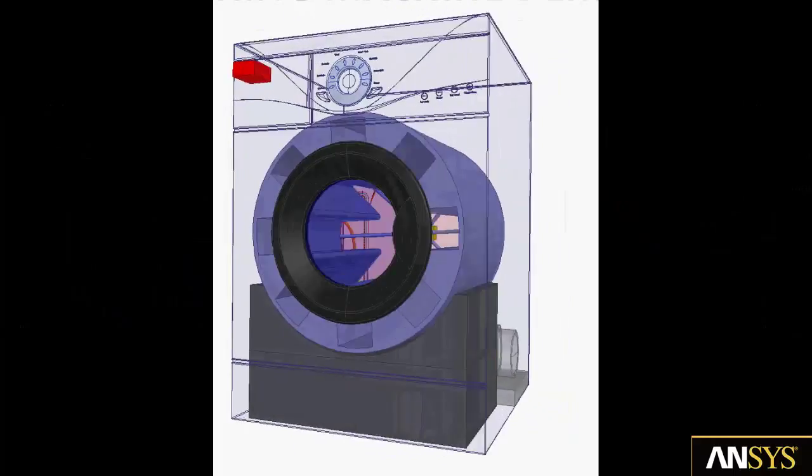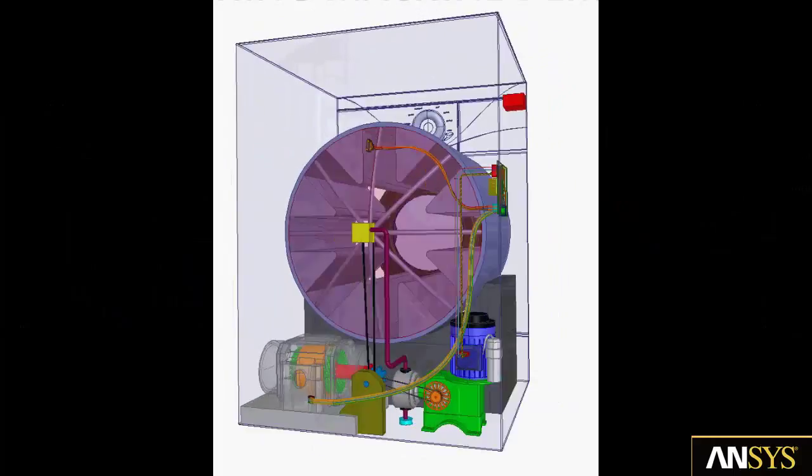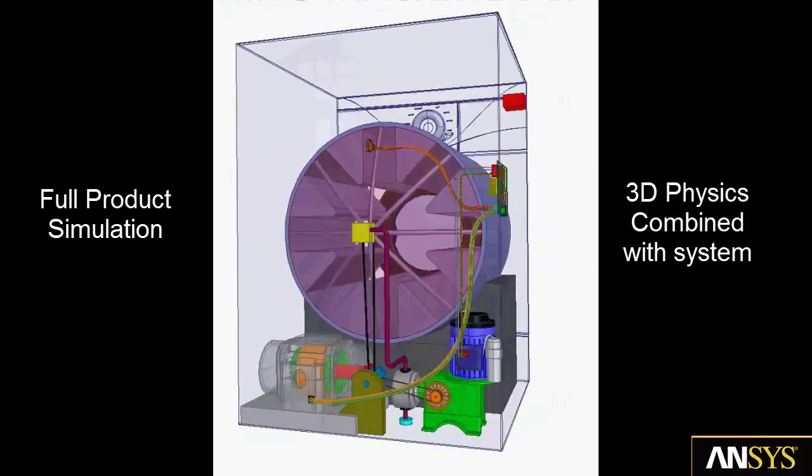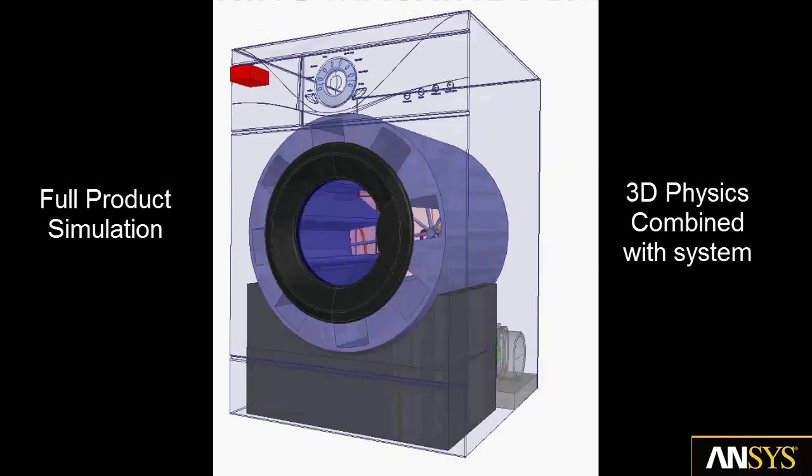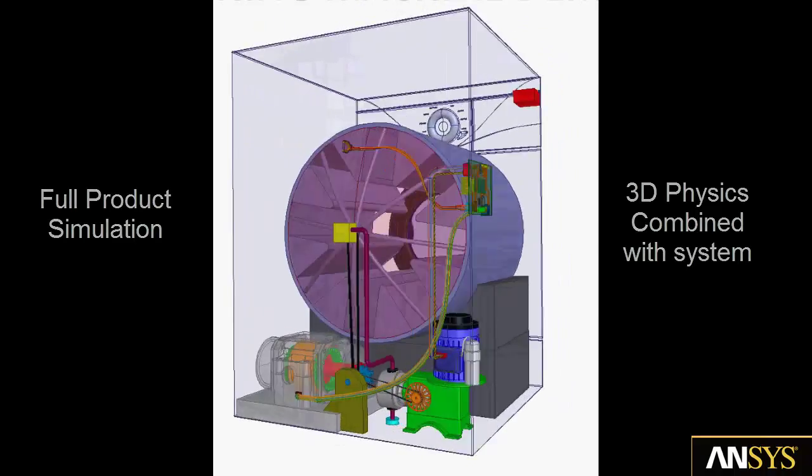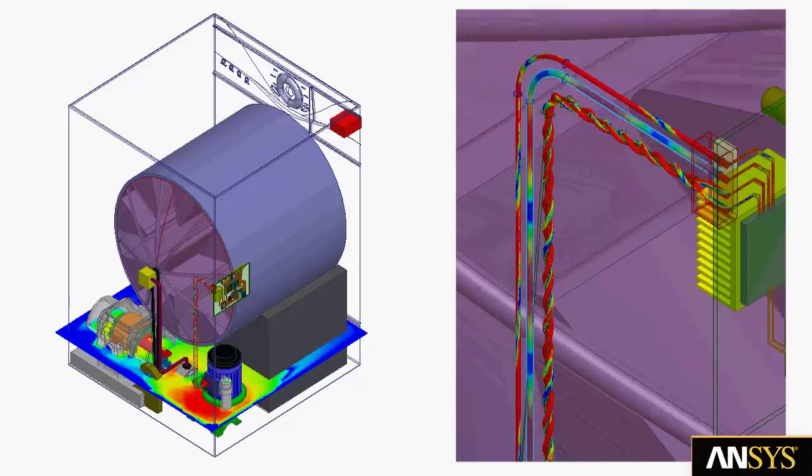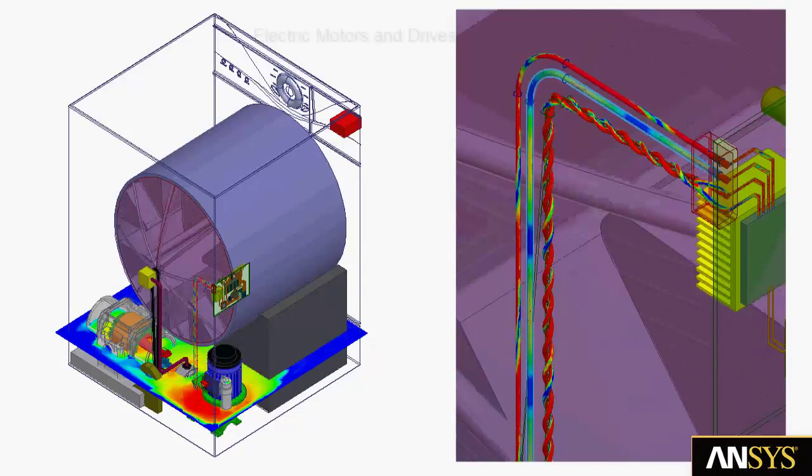In the next several minutes, we will demonstrate simulation technologies that enable full product simulation by combining 3D physics with system level analysis. The example is a washing machine that was created by ANSYS channel partner ESSS in Brazil.